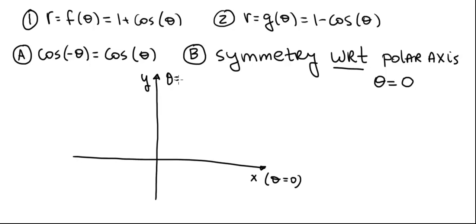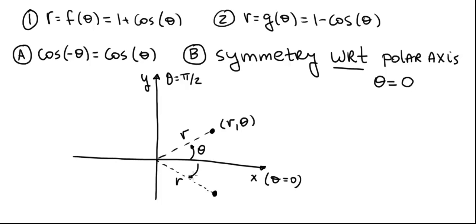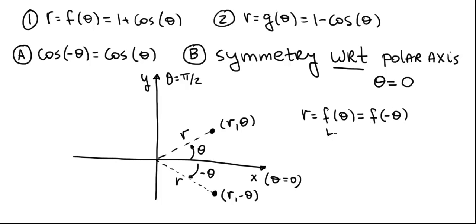If we have a point on the graph in the first quadrant with coordinates r and theta, where theta is measured from the polar axis in the counterclockwise direction, then symmetry with respect to the polar axis says we must have a point on the opposite side with the same r but angle measured clockwise, denoted minus theta. So if (r, theta) is on the graph, then (r, minus theta) must also be on the graph. Therefore, for r equals f of theta, replacing theta with minus theta should yield the same r. This is the test for symmetry with respect to the polar axis.